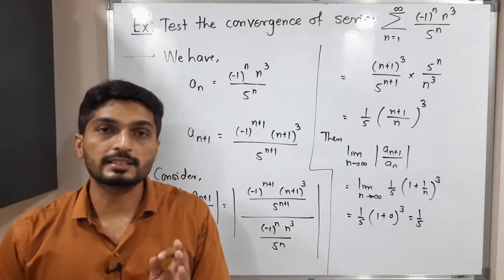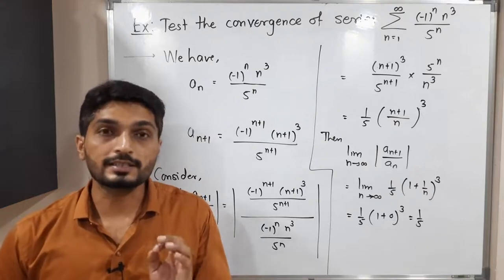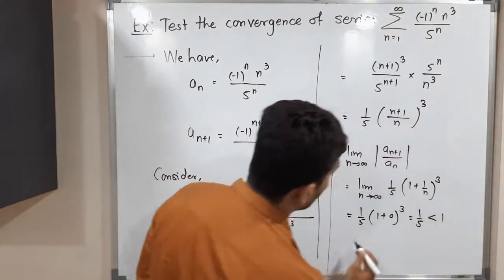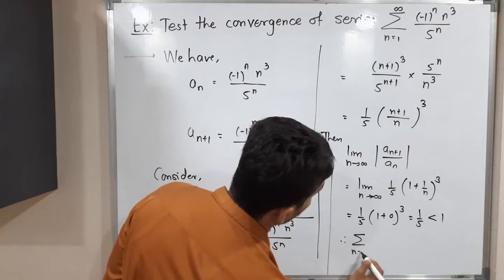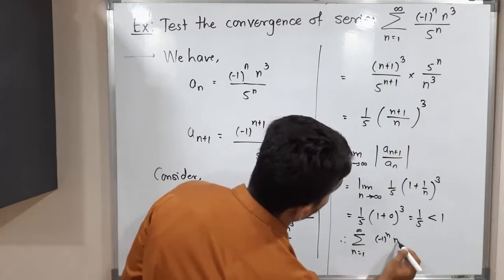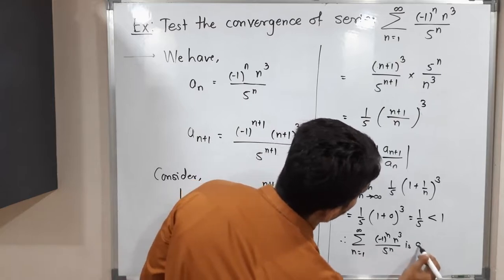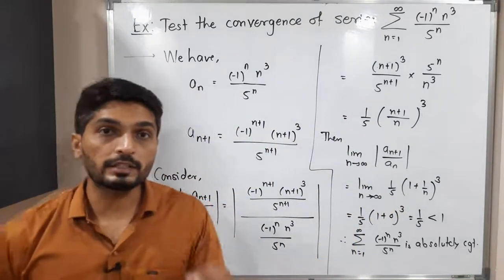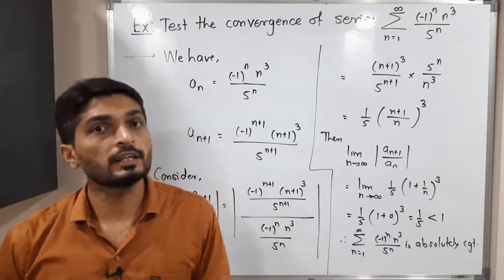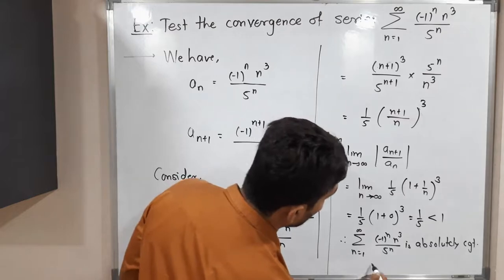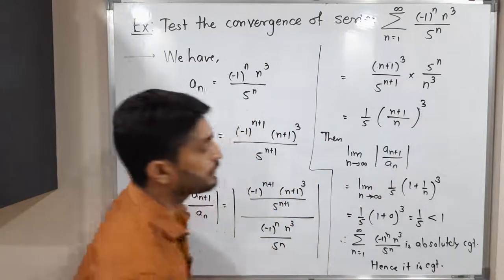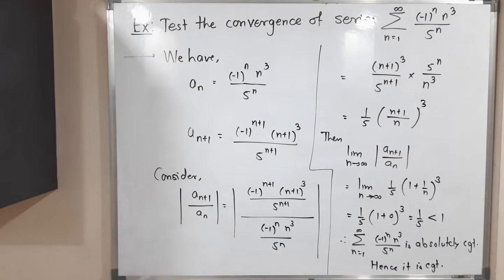The ratio test tells us: if the limit is less than 1, the series is absolutely convergent; if greater than 1, divergent. Here our limit is 1/5, which is less than 1, so the series Σ (-1)^n · n³ / 5^n is absolutely convergent. Since every absolutely convergent series is convergent, the given series is convergent.